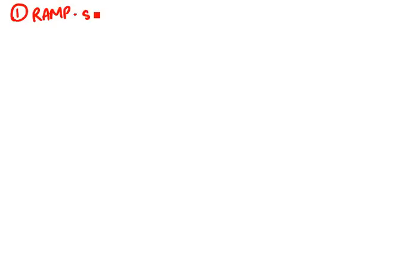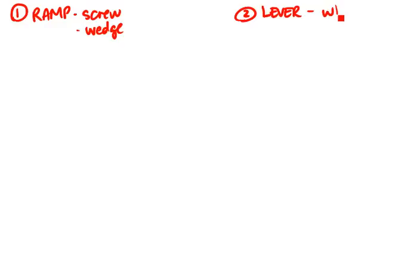The first family we're going to look at is the lever family and the ramp family. The ramp family includes both the screw and the wedge as simple machines, whereas the lever family includes such things as the seesaw, a hockey stick, a wrench, but also the wheel and the pulley.